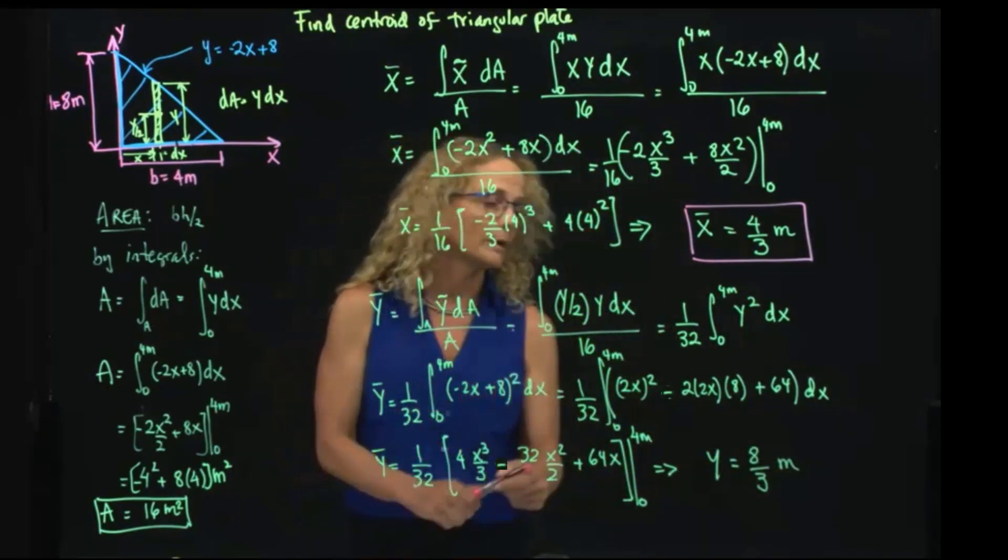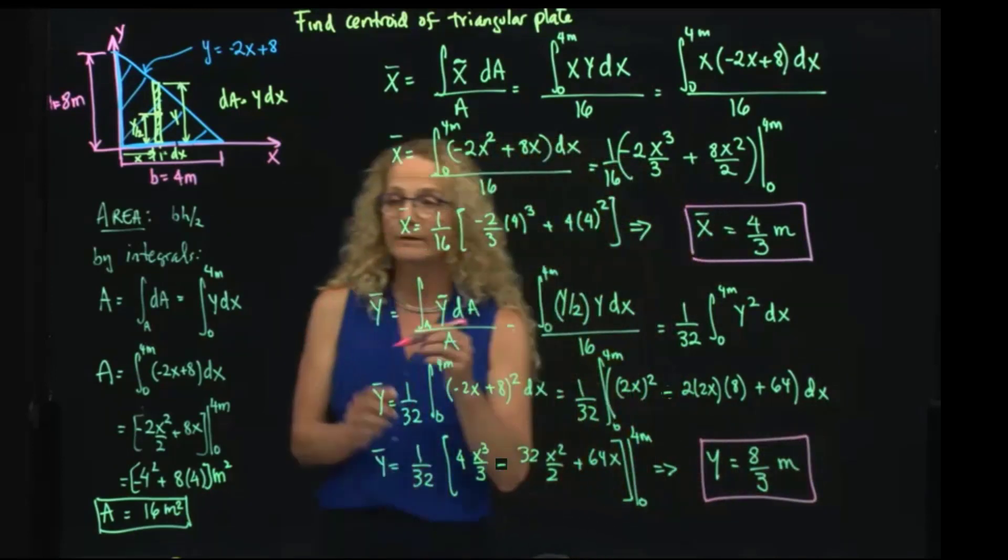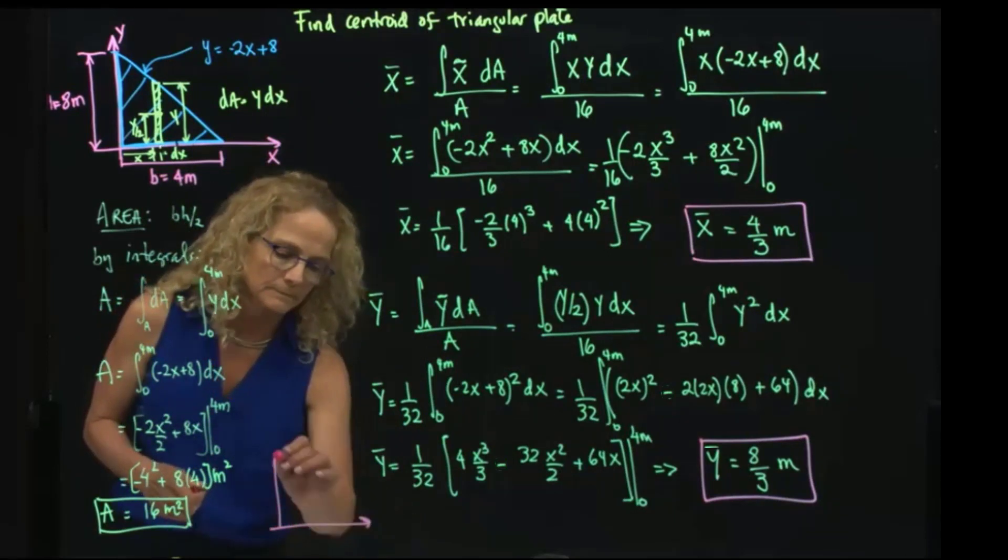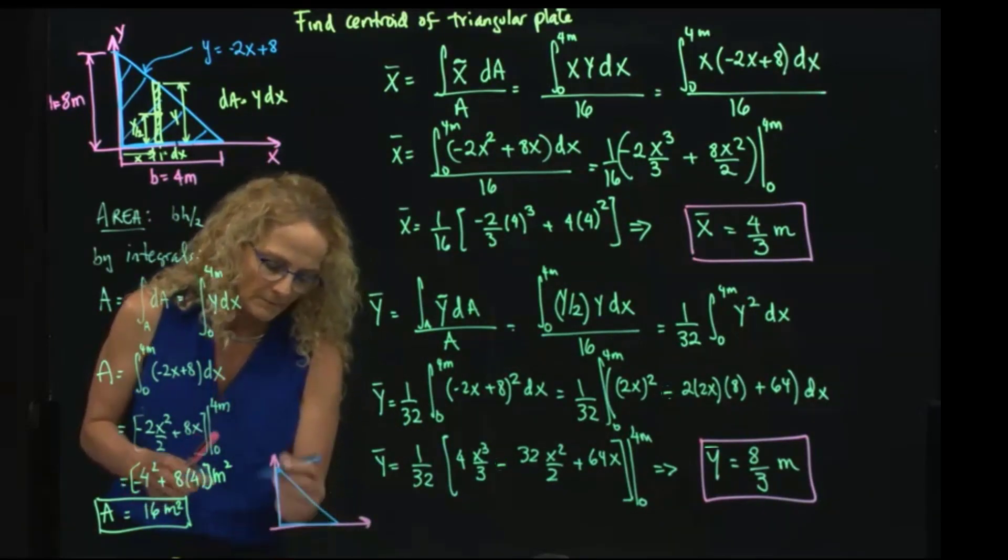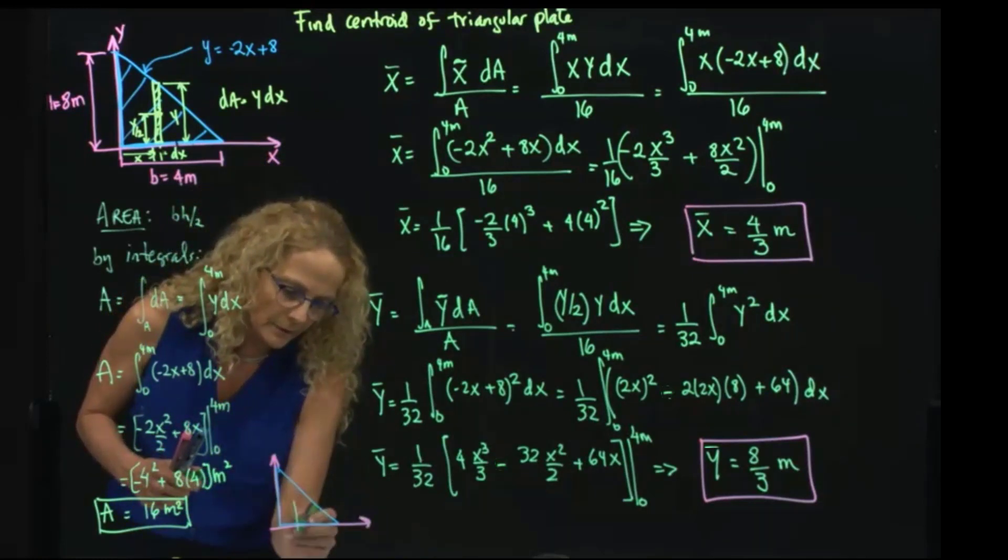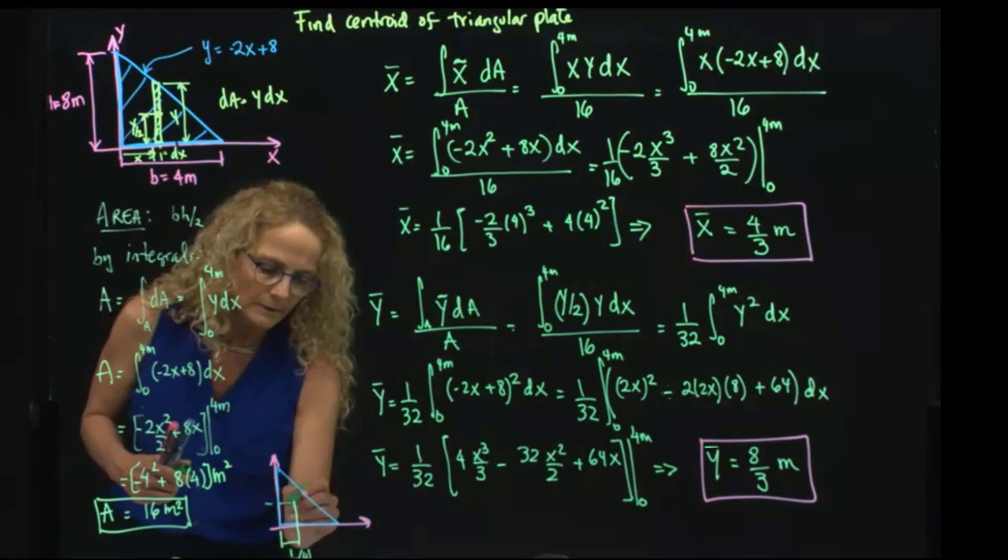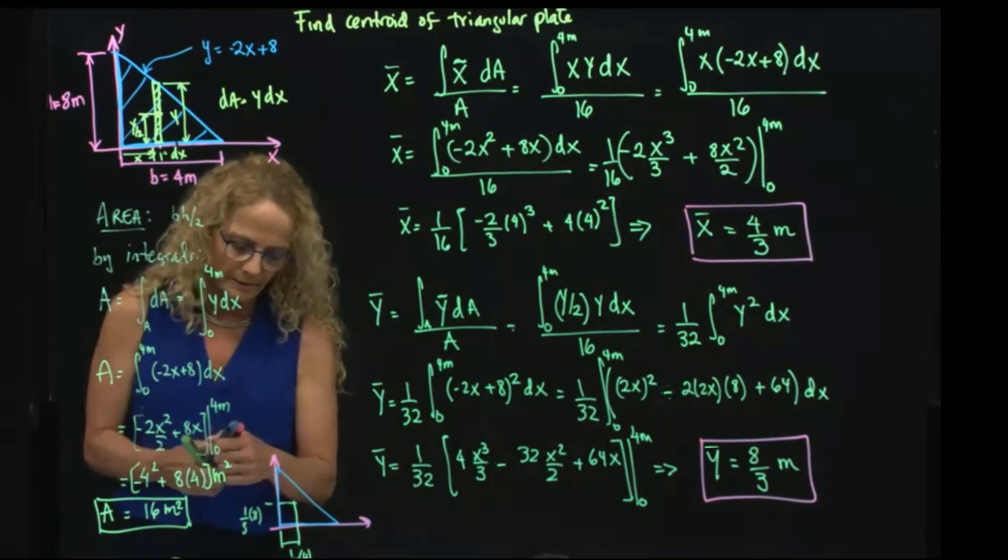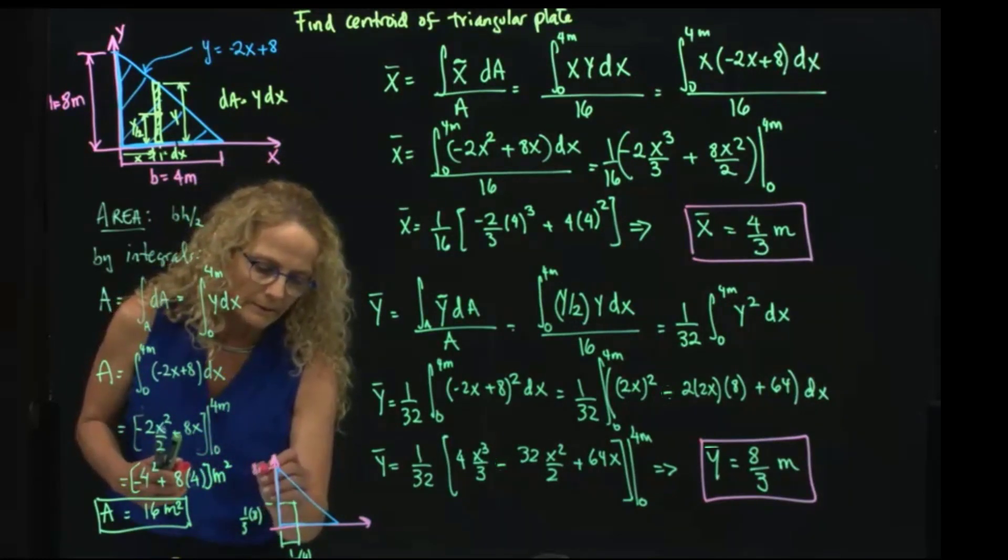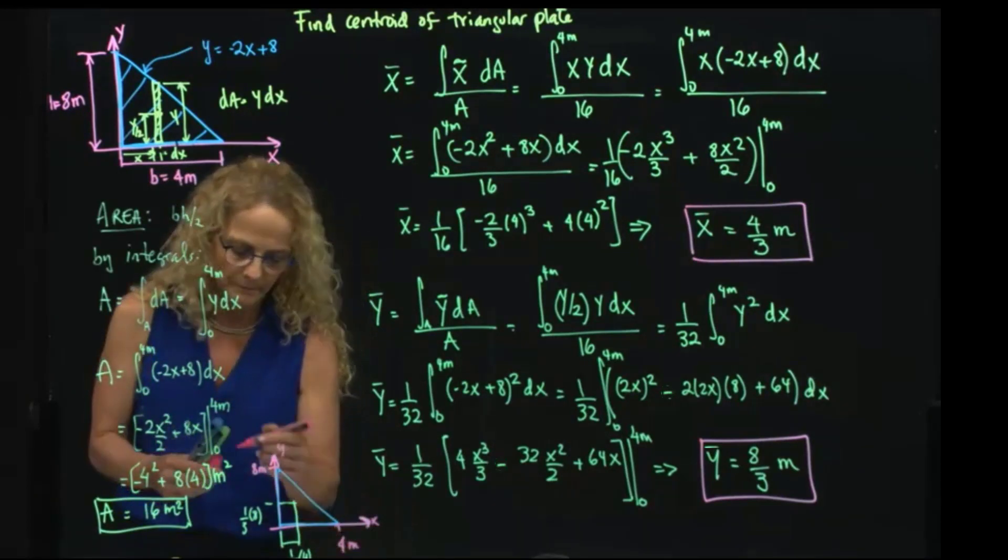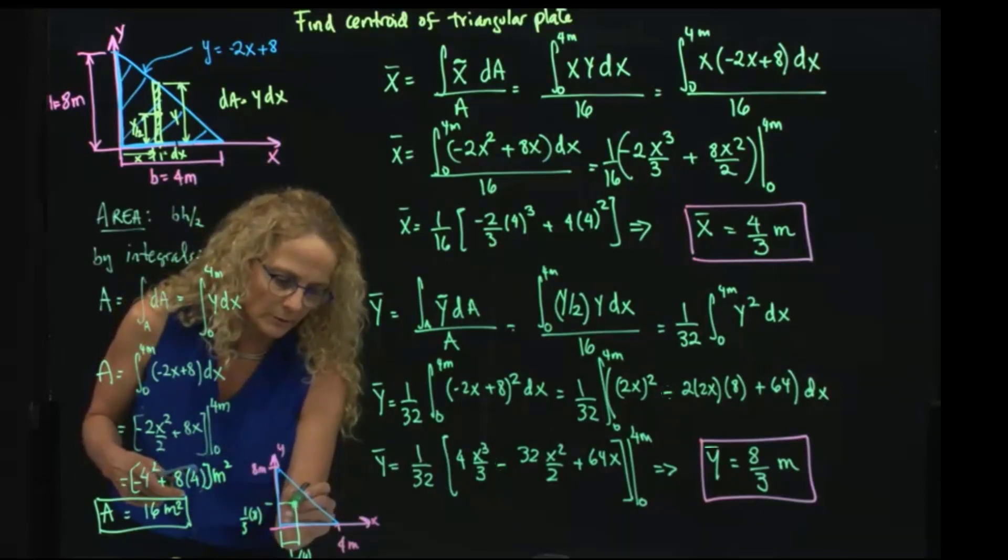Again, we get that my centroid of my figure, my centroid will be located at 1 third of 4, which is my base, and this will be located at 1 third of 8, being 8 my height and 4 my base of my triangle. And this is the centroid that we were looking for.